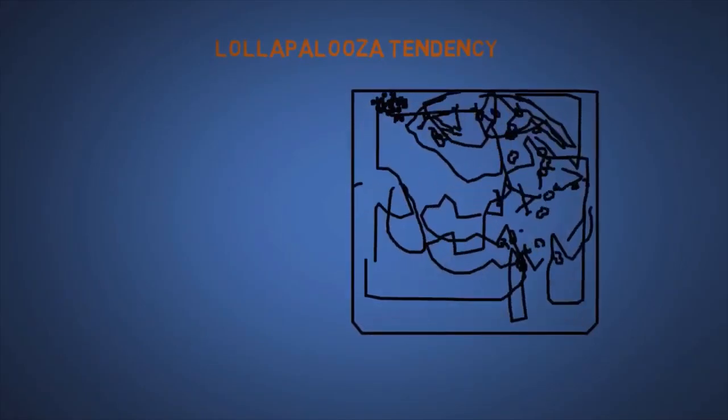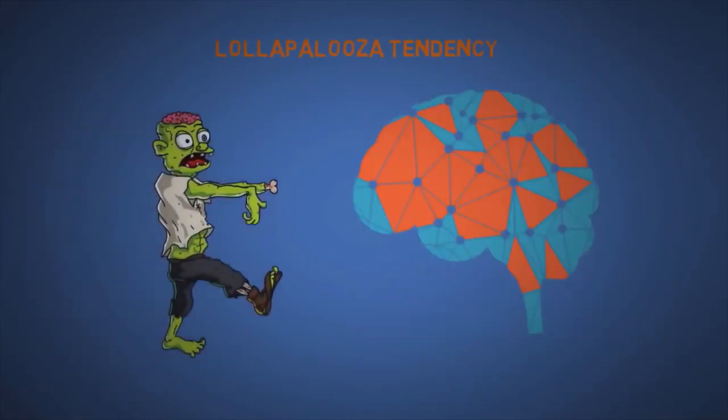The twenty-fifth and most important of all is the Lollapalooza tendency. This basically says if enough cognitive biases are activated at the same period of time, you'll become a helpless zombie.